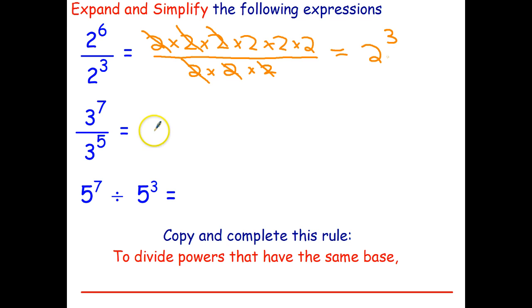Okay let's try this one. We'll do it by expanding it out first. So I have to multiply together seven threes. That's 4, 5, 6, 7, divided by five threes: 1, 2, 3, 4, 5.